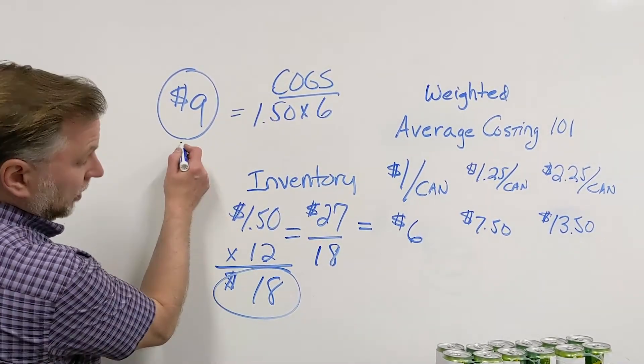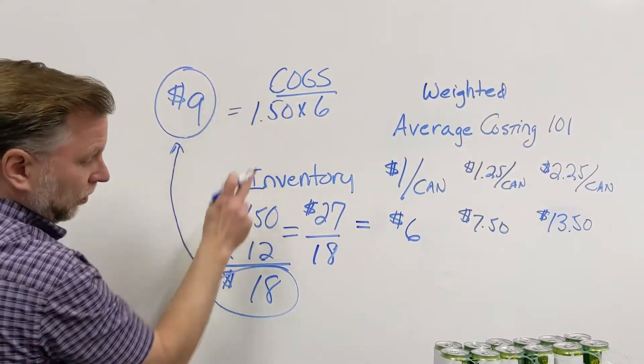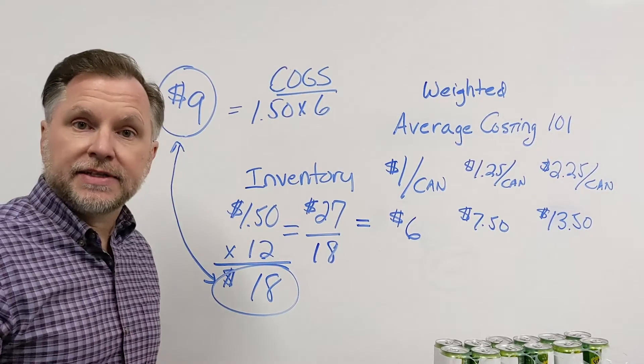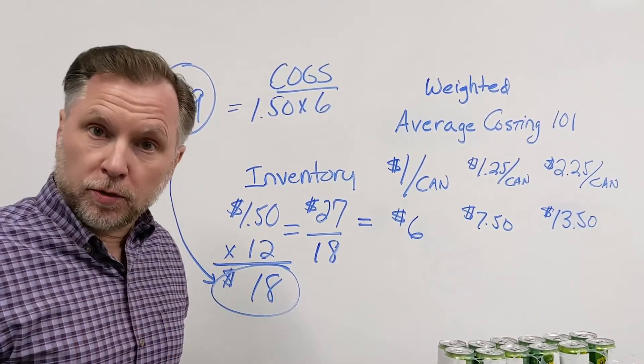So if you'll notice, it still equals when we add our cost of goods sold plus our inventory, the $27 of costs available for sale or our total purchases.